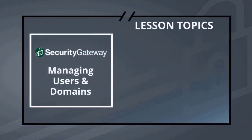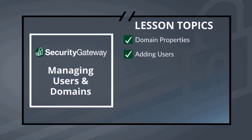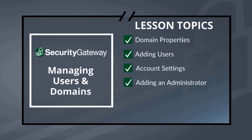This lesson covers the following topics: domain properties, including assigning user and message size limits, configuring user verification sources, assigning a mail server to a domain and adding a domain administrator, adding users manually and assigning aliases to a user, configuring account settings including quarantine and archive settings, adding an administrator, and configuring user options such as allowing users to modify their own passwords or view their own quarantine folders, as well as various other settings.